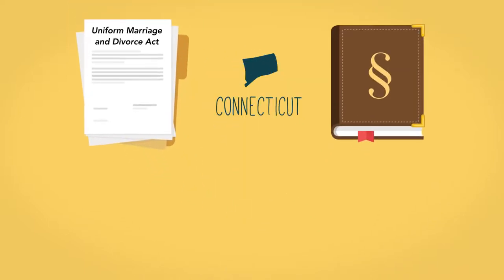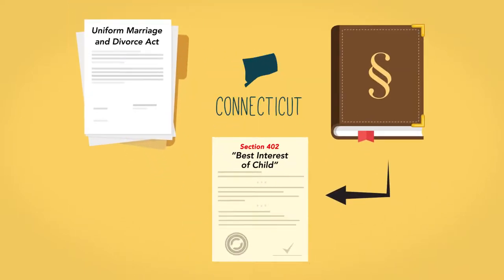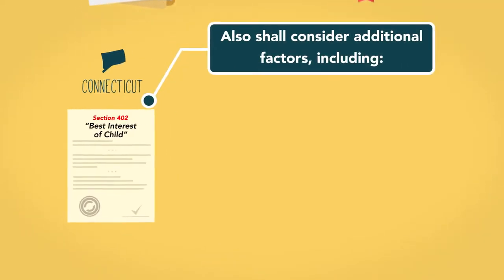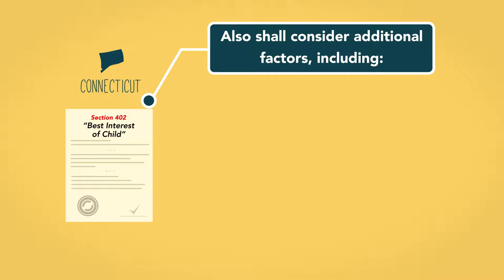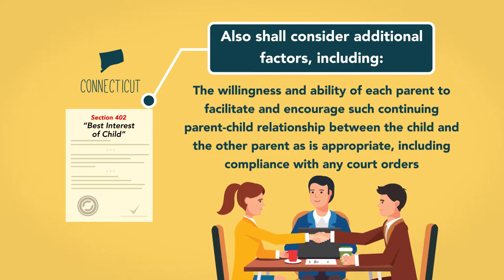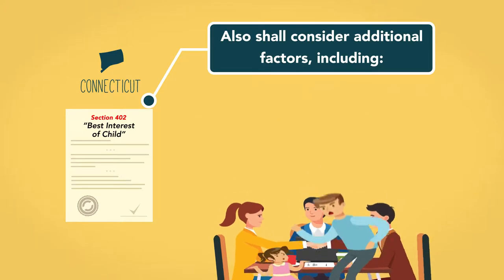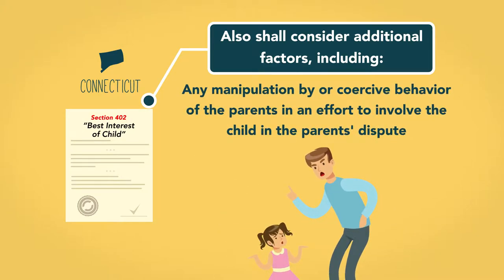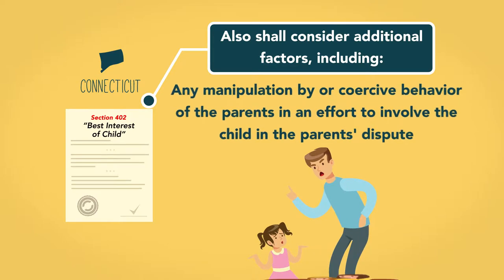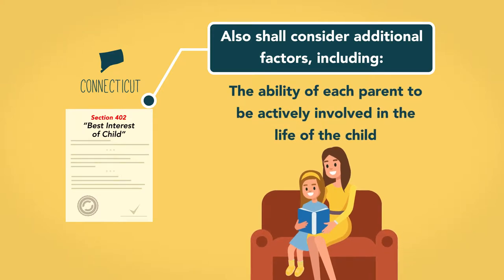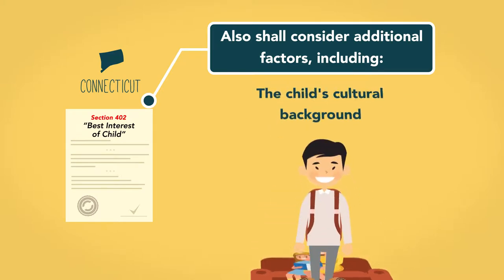In Connecticut, for example, a court must consider the UMDA Section 402 factors but shall also consider additional factors, including: the willingness and ability of each parent to facilitate the continuing parent-child relationship with the other parent, including compliance with court orders; any manipulation or coercive behavior by parents to involve the child in their dispute; the ability of each parent to be actively involved in the child's life; and the child's cultural background.